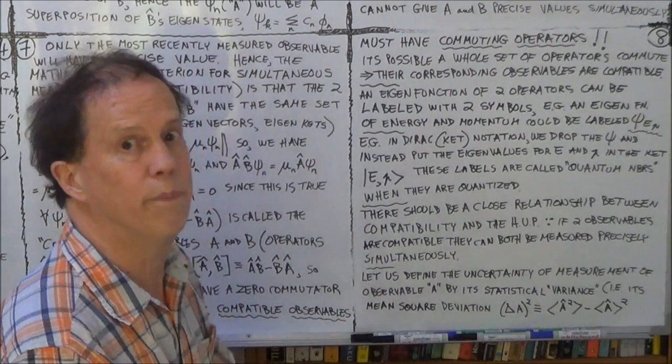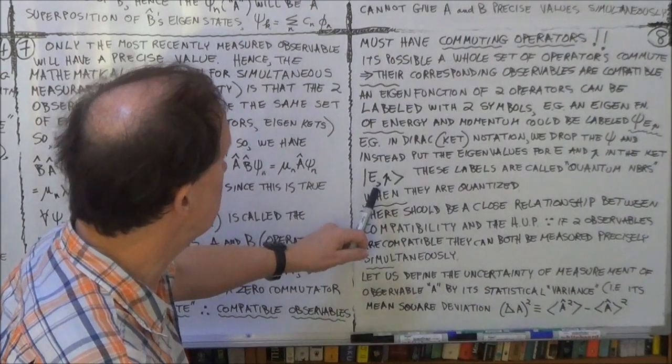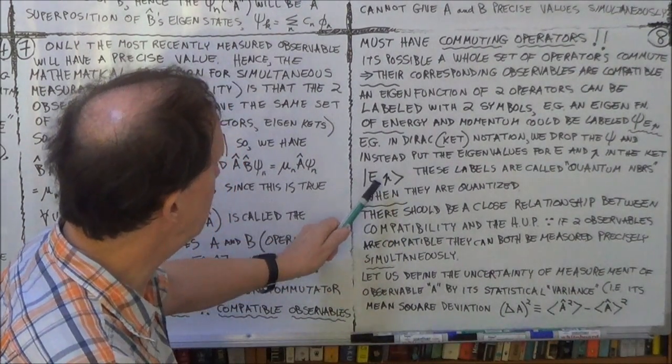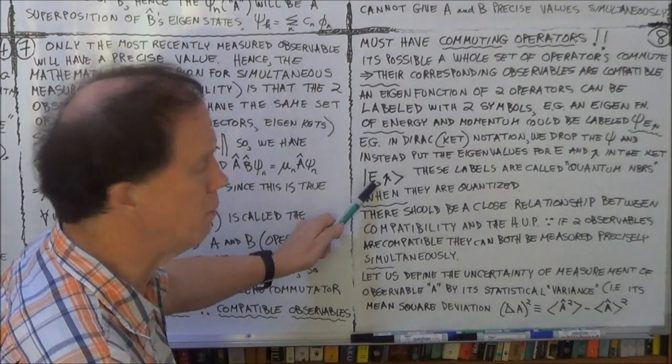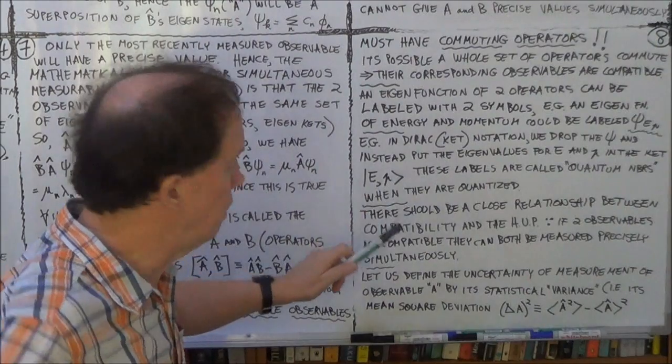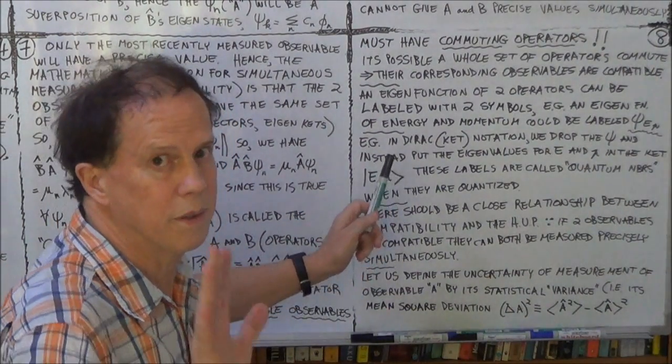And you can measure these two compatibly. And so you can put the two values here. Now, the generic label, if you like, e - and e could take a whole range of discrete energy values, and similarly for p, or it may even be continuous, don't worry.